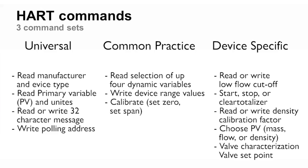Information is transferred between HART devices using commands. Each HART command is identified by a number, and there are hundreds of different commands. Each HART command is used to access a specific piece of information — for example, HART command 1 provides the primary variable, typically the measured value like temperature, pressure, level, or flow of a HART device.